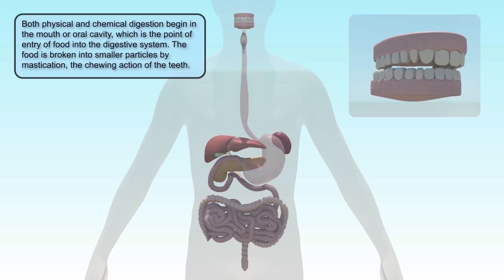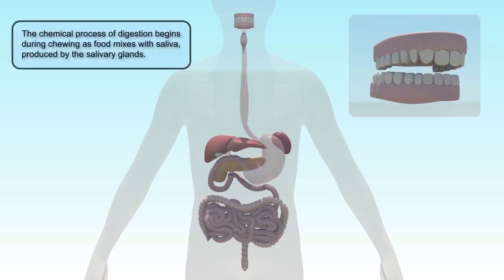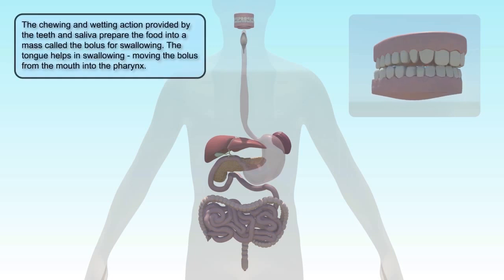The food is broken into smaller particles by the chewing action of the teeth. The chemical process of digestion begins during chewing as food mixes with saliva produced by the salivary glands. The chewing and wetting action provided by the teeth and saliva prepare the food into a mass called the bolus, for swallowing.